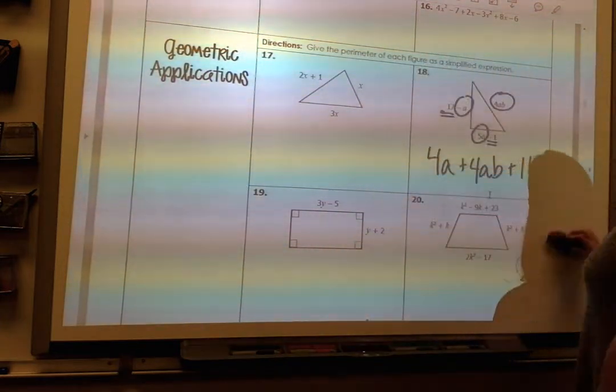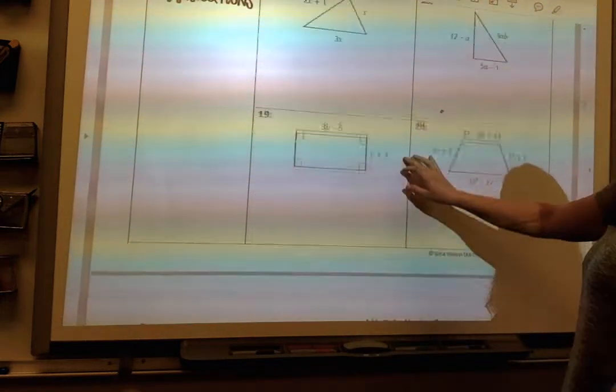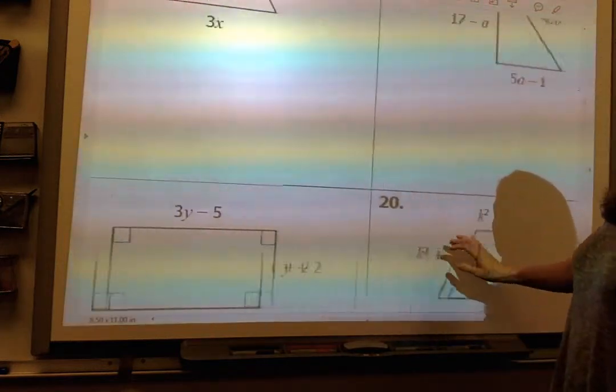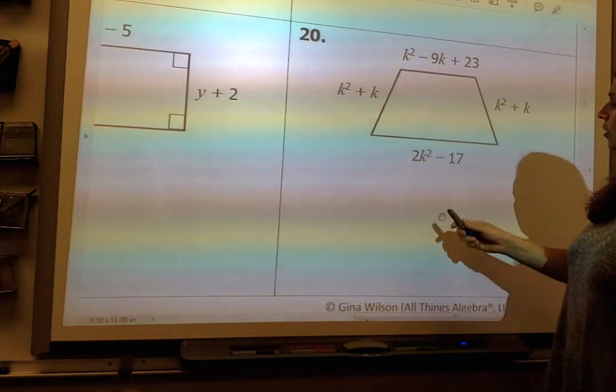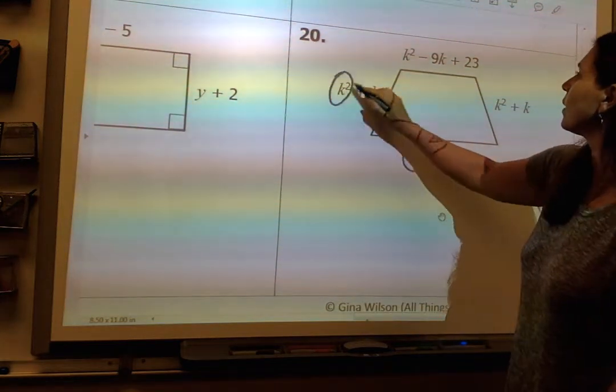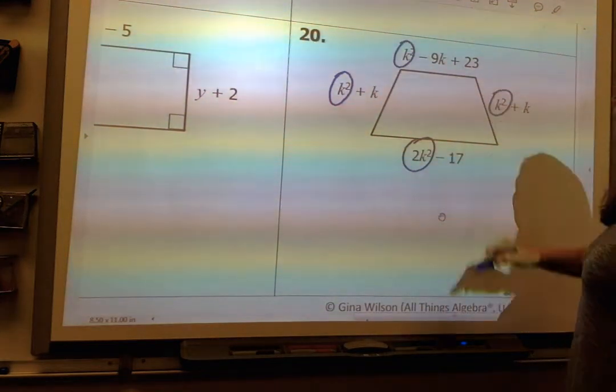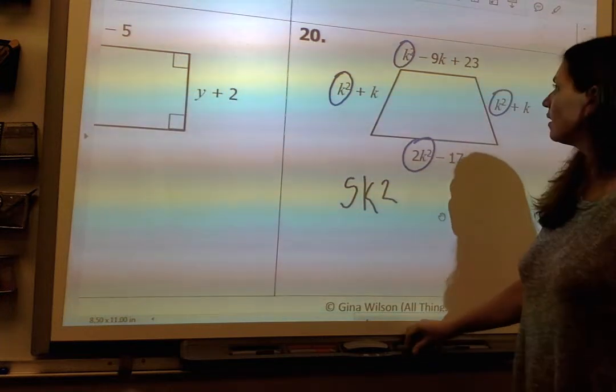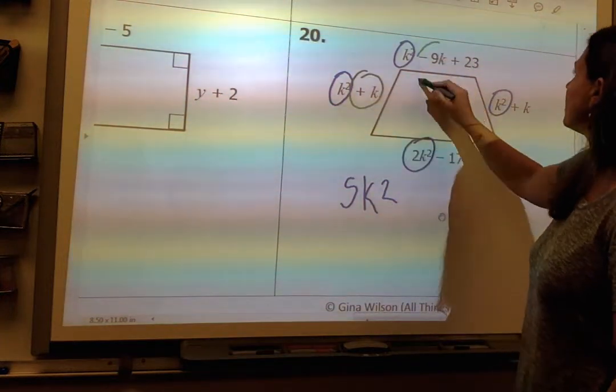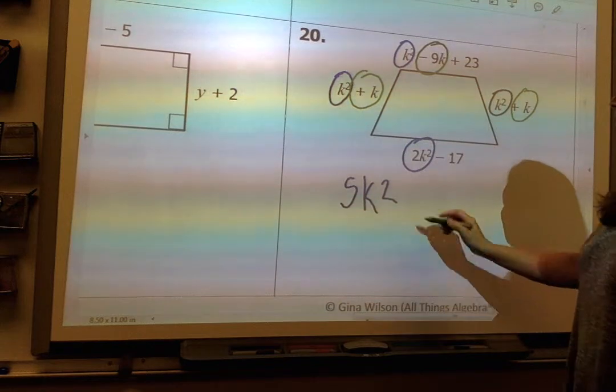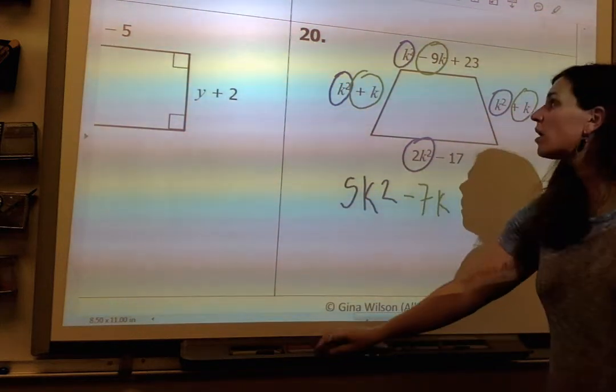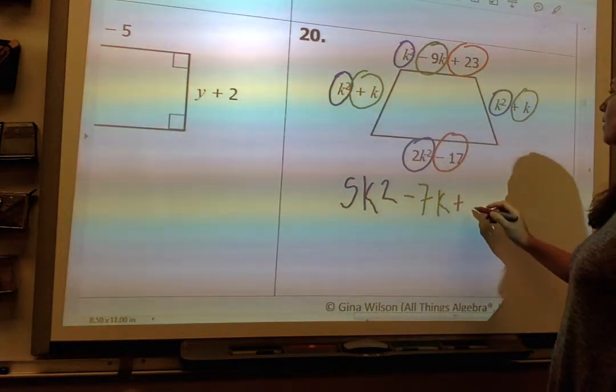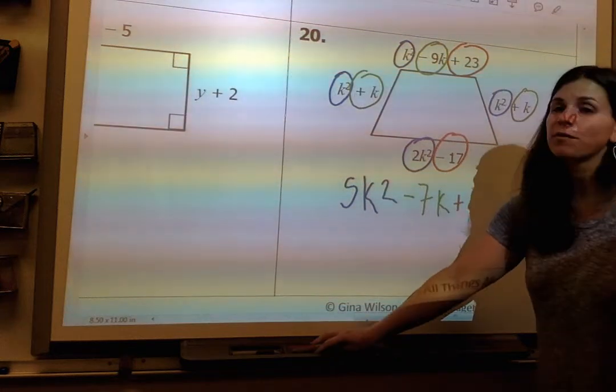If I look down at my trapezoid here on number 20. I'm going to expand this because for some reason I just think it's easier to see. Number 20, look at this. I have 2k squared, a k squared, a k squared, and a k squared. How many k squareds do I have? 5. I have 5k squareds, and then I've got a k, a negative 9k, and a k, which combines to be negative 7k. In my constant terms, I have a positive 23 and a negative 17, which gives me a positive 6. So that is my simplified expression.